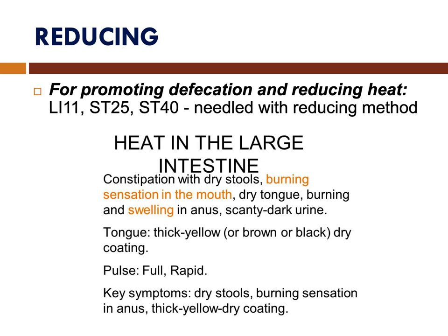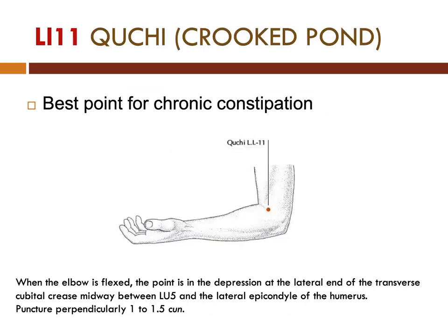Key symptoms are dry stools, burning sensation in the anus, and thick yellow dry coating. The first point is LI11, the best point for chronic constipation. It is the He-sea point of the large intestine channel, so it is good for any stomach issues. To locate this point, when the elbow is flexed, the point is in the depression at the lateral end of the transverse cubital crease, midway between Lung 5 and the lateral epicondyle of the humerus. This point is punctured perpendicularly, 1 to 1.5 cun.